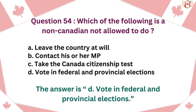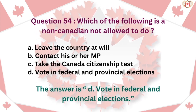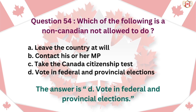Question 54: Which of the following is a non-Canadian not allowed to do? A. Leave the country at will, B. Contact his or her MP, C. Take the Canadian citizenship test, D. Vote in federal and provincial elections. The answer is D. Vote in federal and provincial elections.